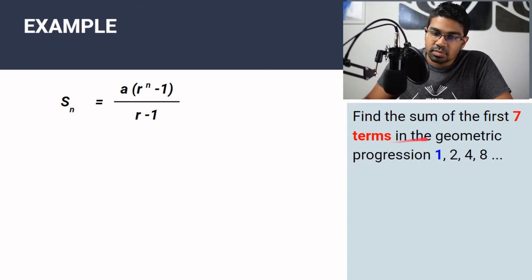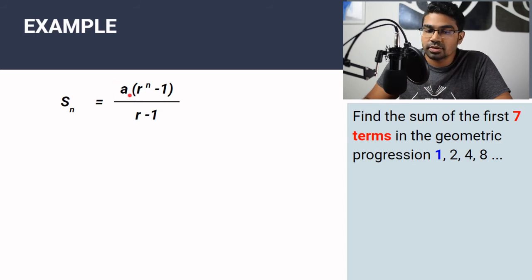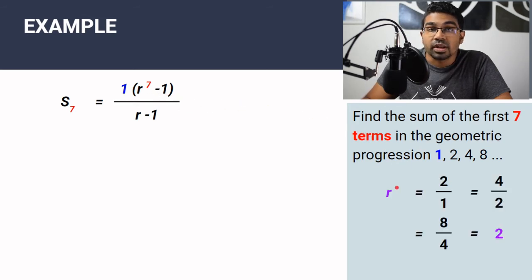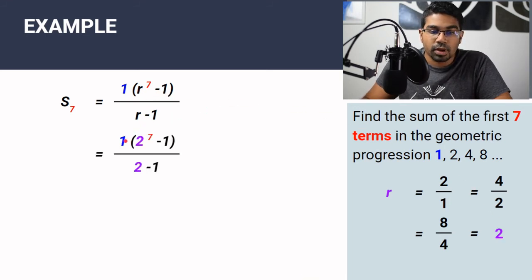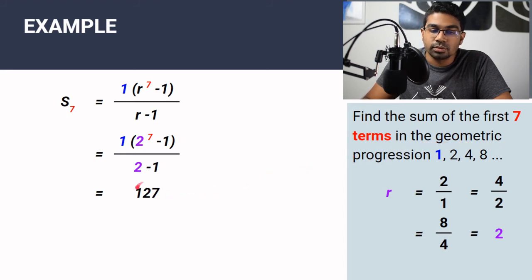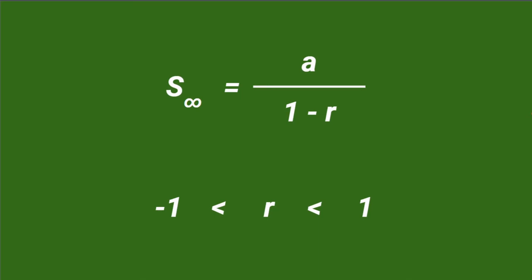Let's find the sum of the first seven terms in the geometric progression 1, 2, 4, 8, and so on. We have n = 7 and A = 1. To find R, divide any term by the one before it: 2÷1, 4÷2, or 8÷4 — you always get 2. So R = 2. Substituting: S7 = 1 × (2^7 − 1)/(2 − 1) = 127. The sum of the first seven terms is 127.